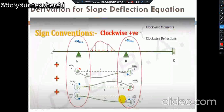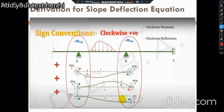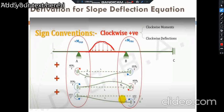Now we will see the derivation of slope deflection equations — the main core part of this method. Consider span AB as the intermediate span of any continuous beam subjected to certain arbitrary loading. We treat this span as a fixed beam. Due to this arbitrary loading, the fixed end moment generated at end A is M-bar-AB, and at end B it is M-bar-BA. This is the first step in the derivation of the slope deflection equation.